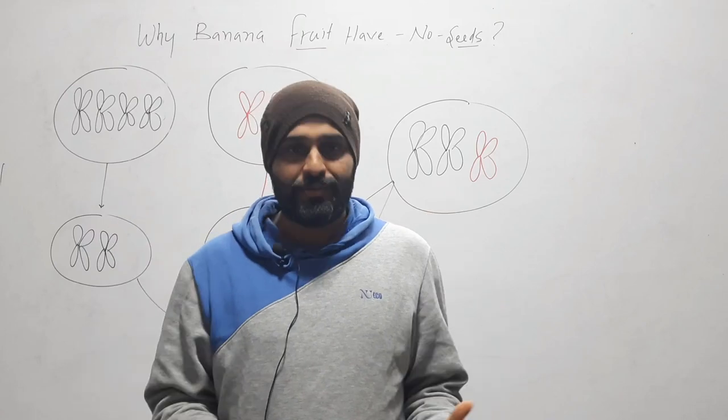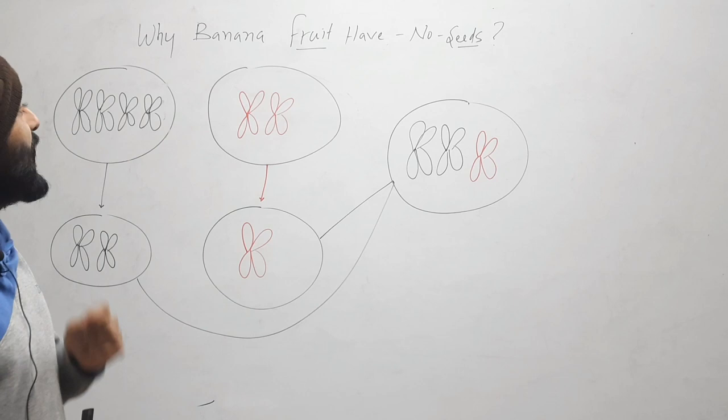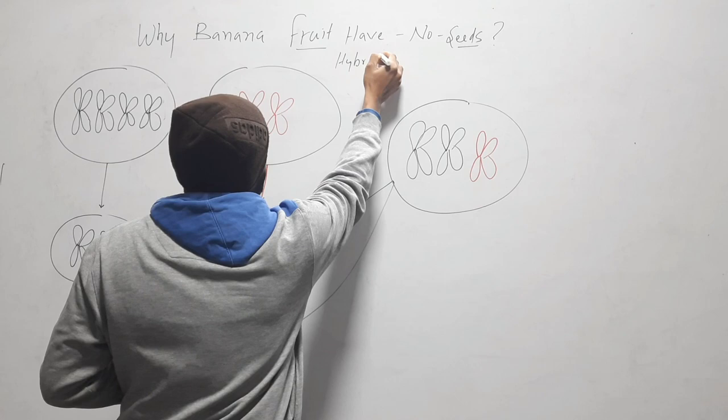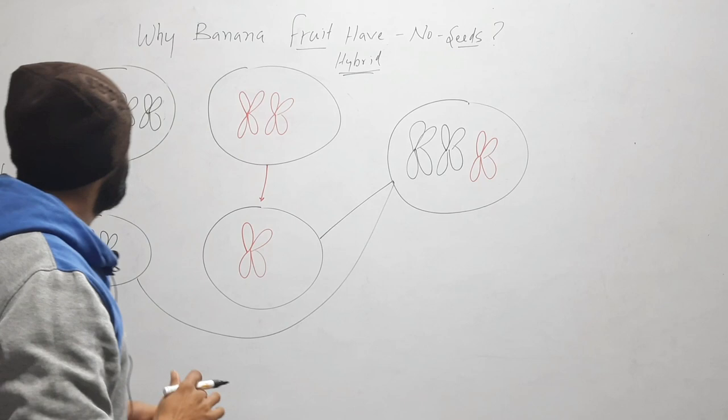Hello friends, welcome to my YouTube channel. In this video we will know why banana fruit have no seeds. The banana that we eat is a hybrid, and this hybrid is produced by hybridization between a tetraploid species and a diploid species.